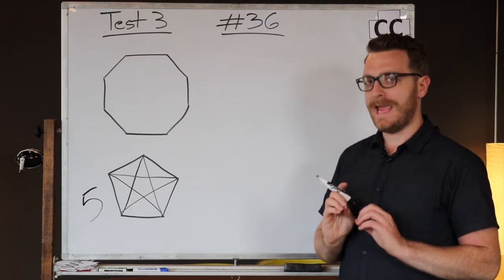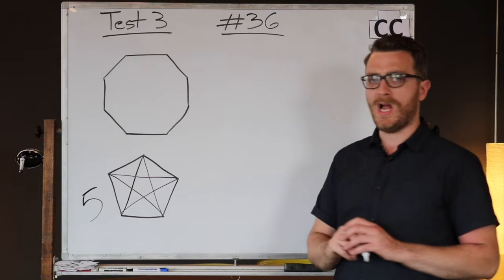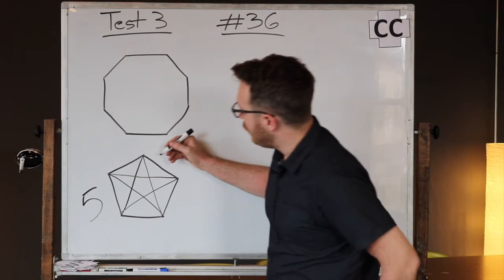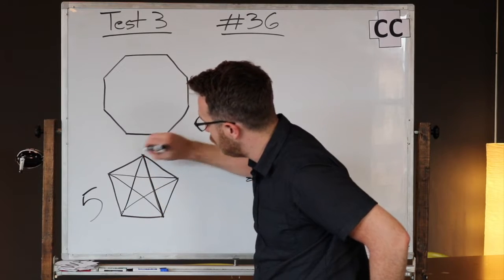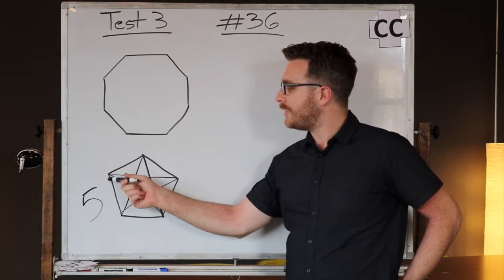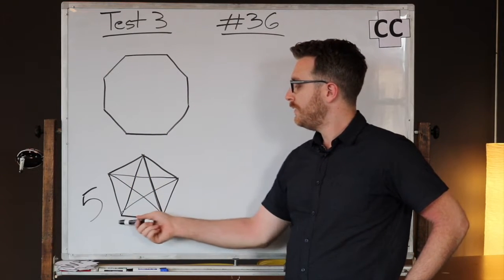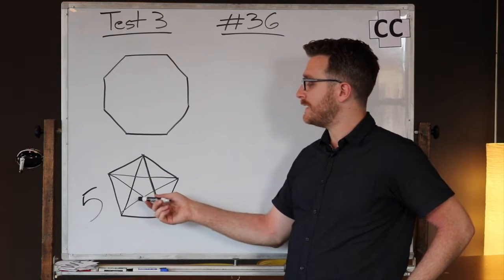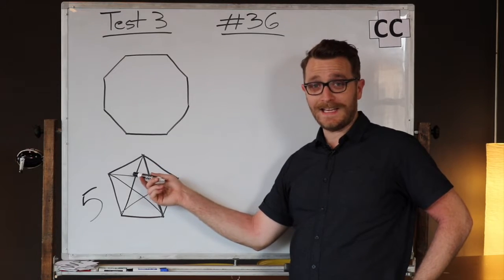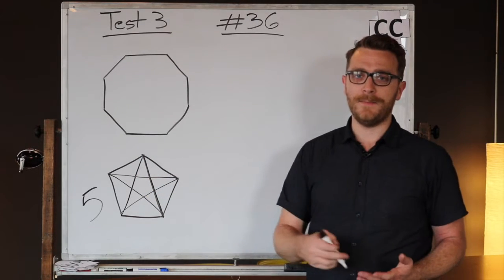It may look like ten at first because it looks like each point has two coming off of it. But if you think about it, each line is shared by two points. So really it looks like two are coming out of each, but really there's only one, two, three, four, five lines. Because after that we start repeating and counting the other side of the same lines.